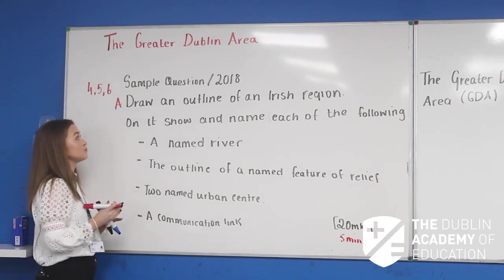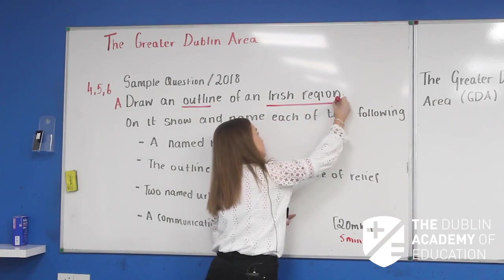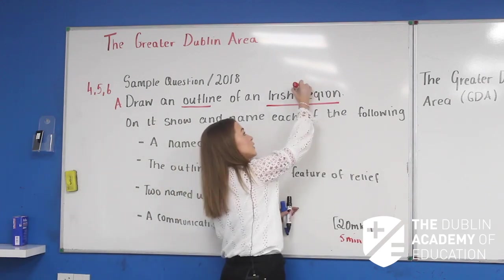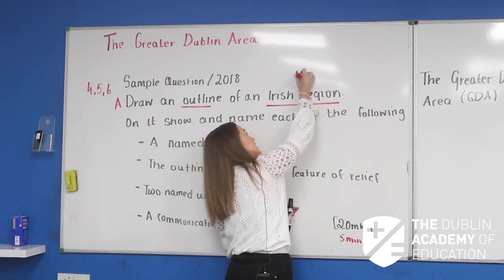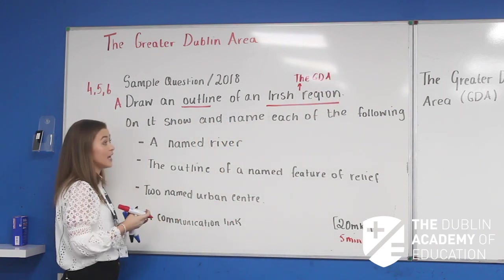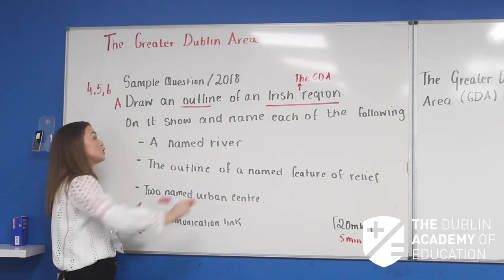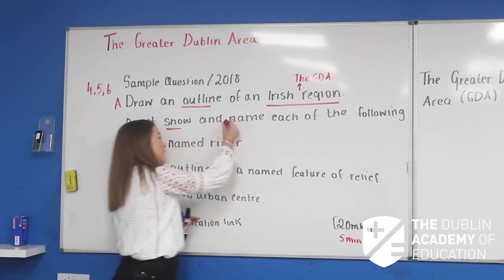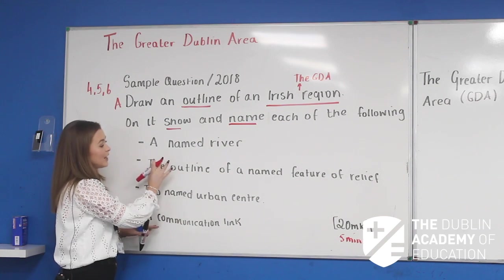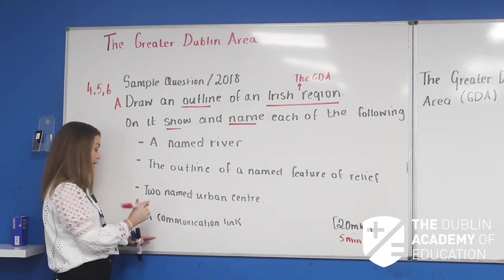Let's have a look at the question. It says: draw — highlight the word — outline an Irish region. The Irish region here, and I want you to jot down, is the GDA, the Greater Dublin Area. On it, show and name each of the following. In relation to this, they will always ask you four things to show and name.